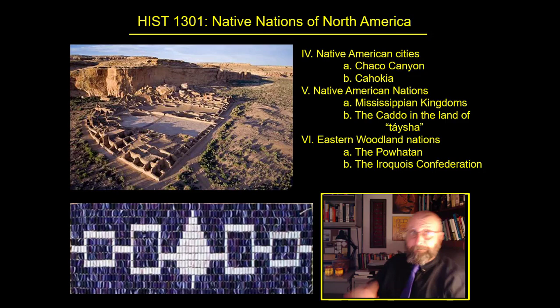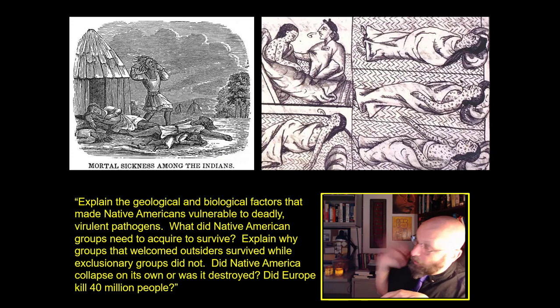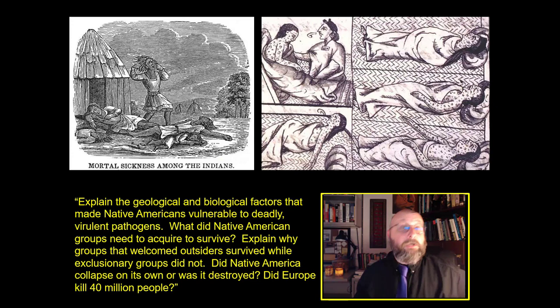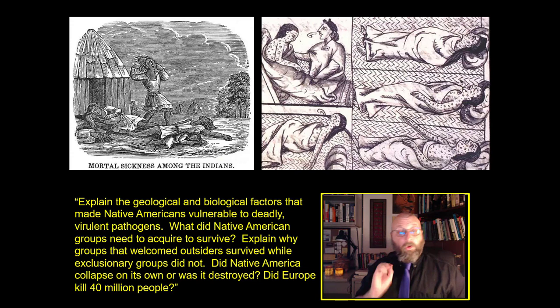All of this is to provide you with enough information to answer that question: Explain the geological and biological factors that made Native Americans vulnerable to deadly, virulent pathogens. What did Native American groups need to do, need to acquire to survive? Explain why groups that welcomed outsiders survived while exclusionary groups did not. Did Native America collapse on its own, or was it destroyed? Did Europe kill 40 million people?